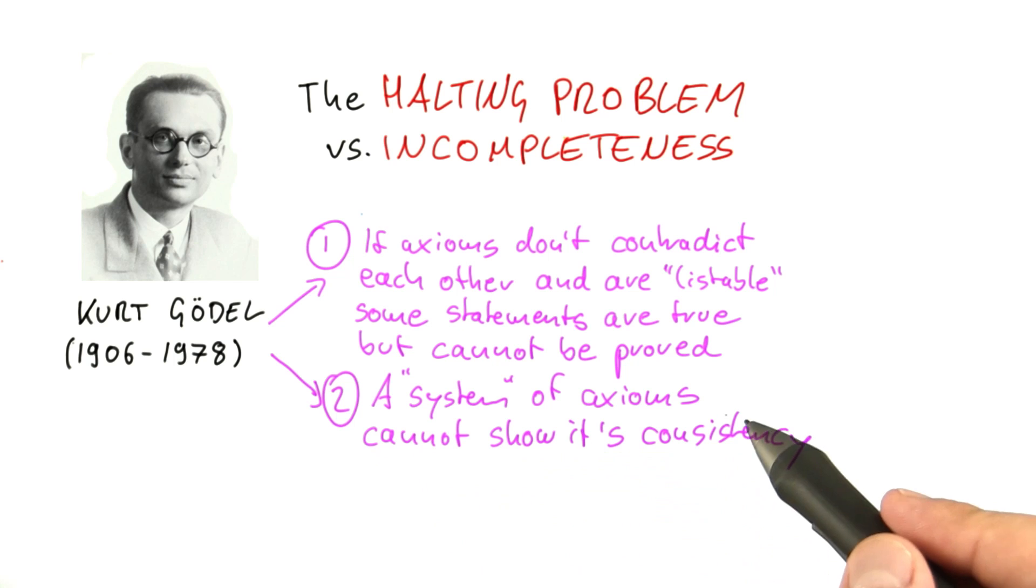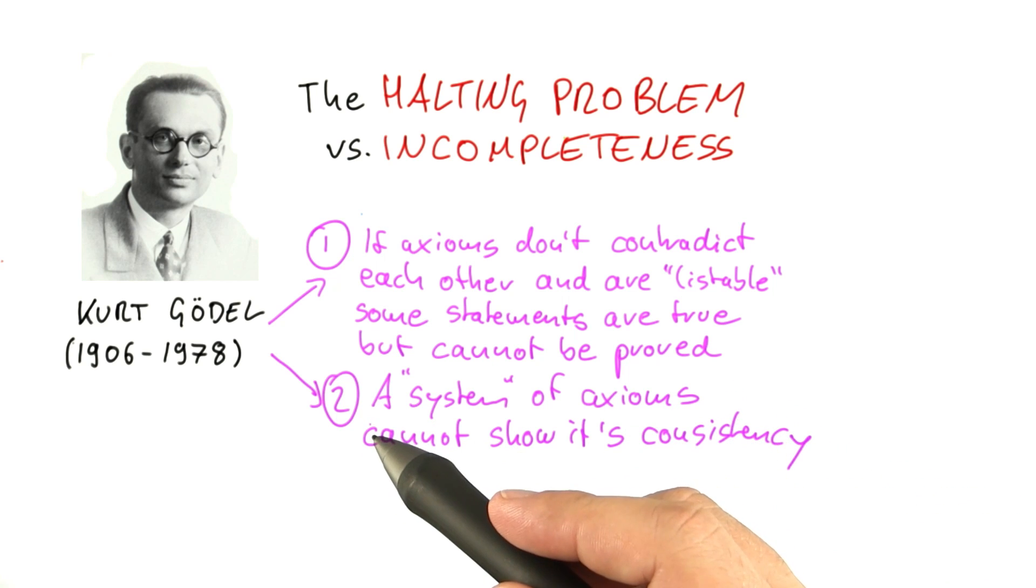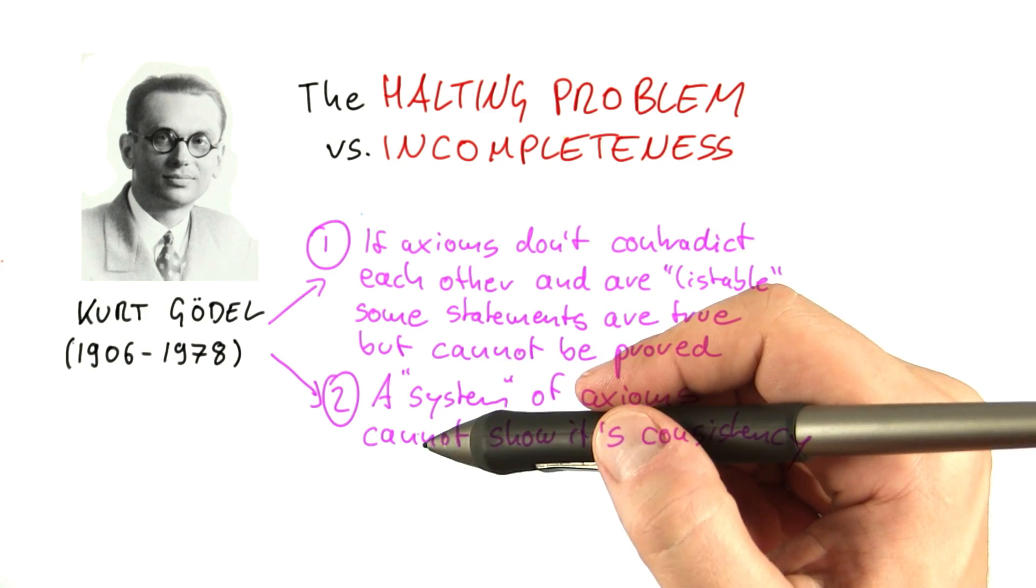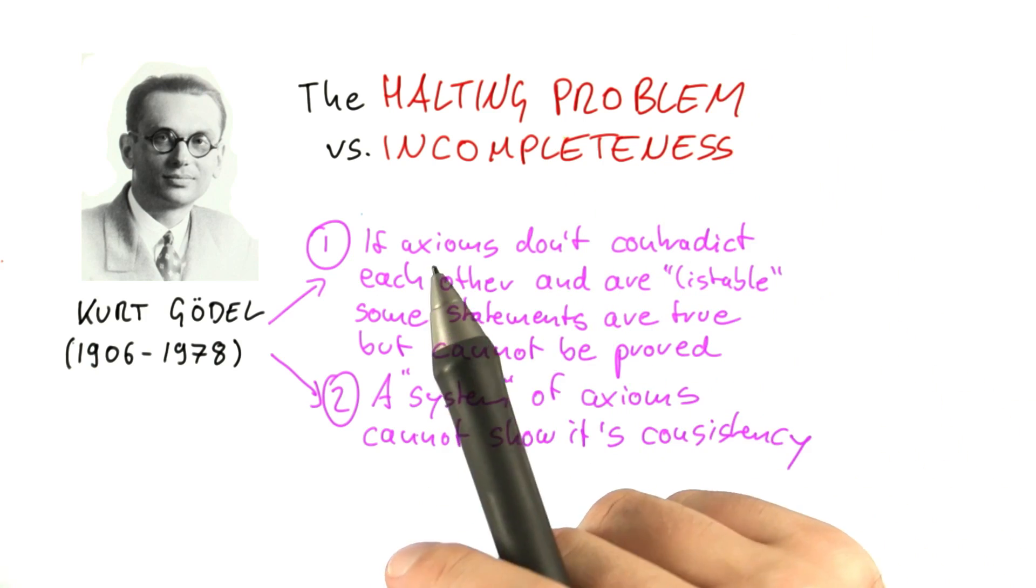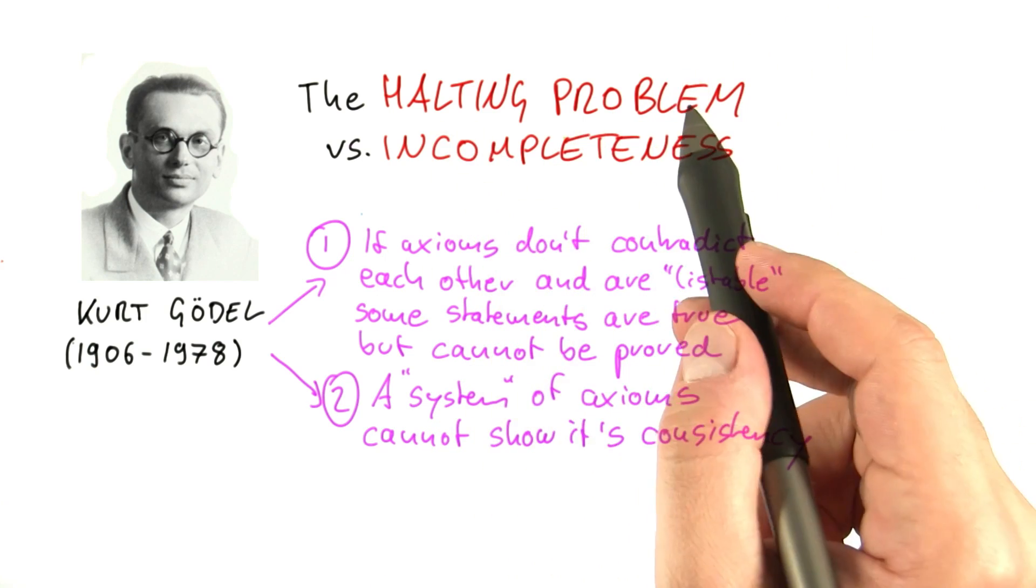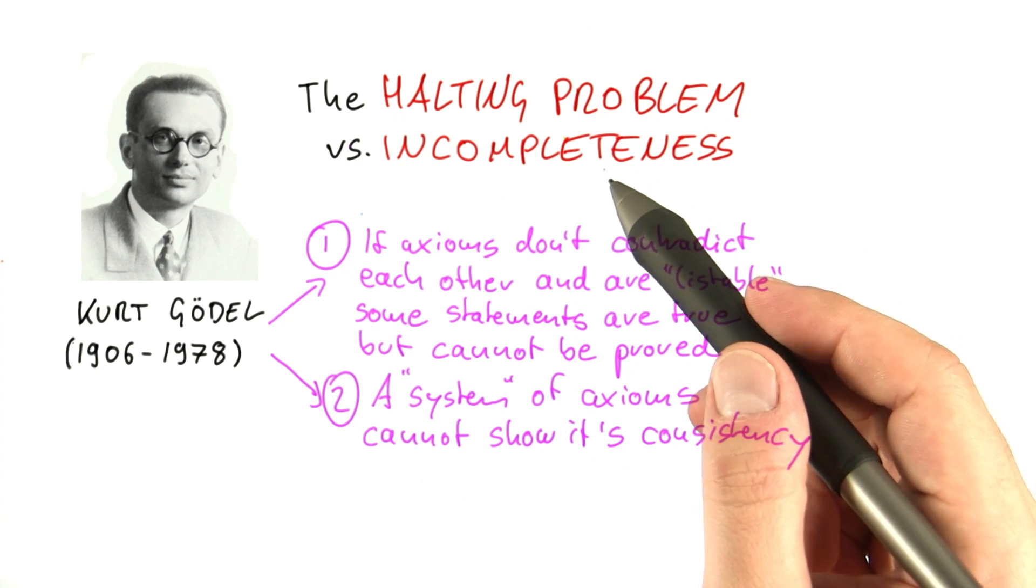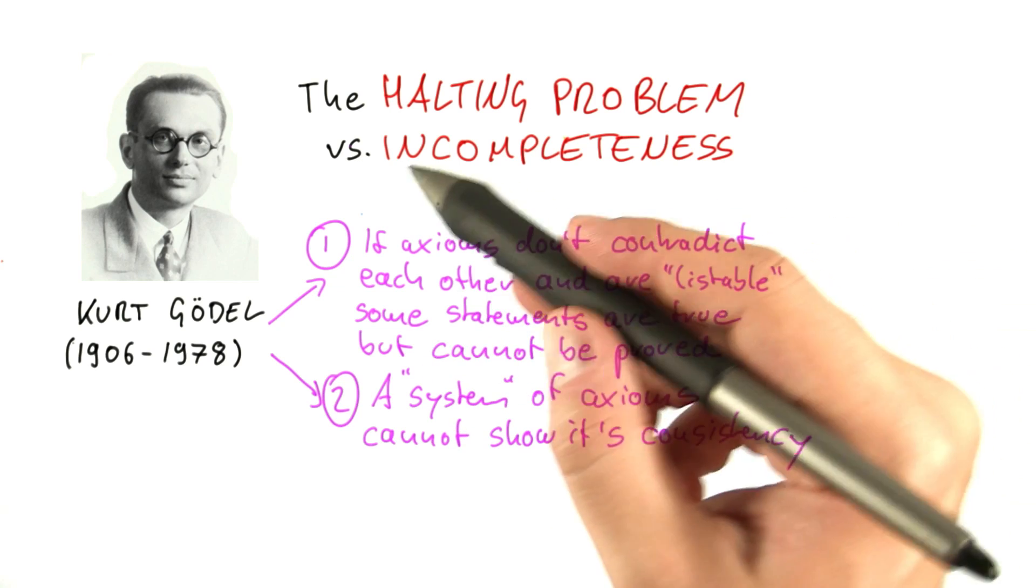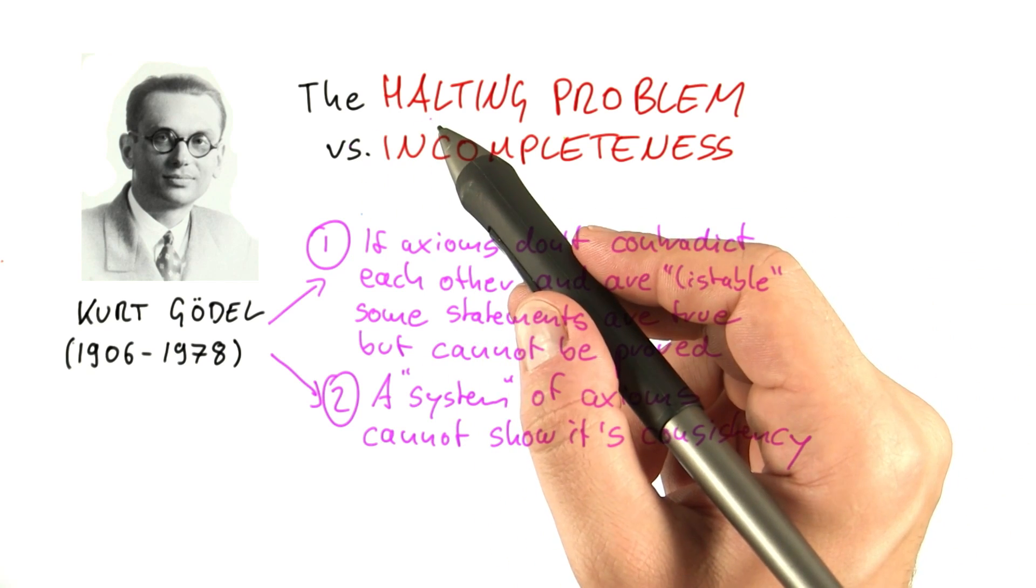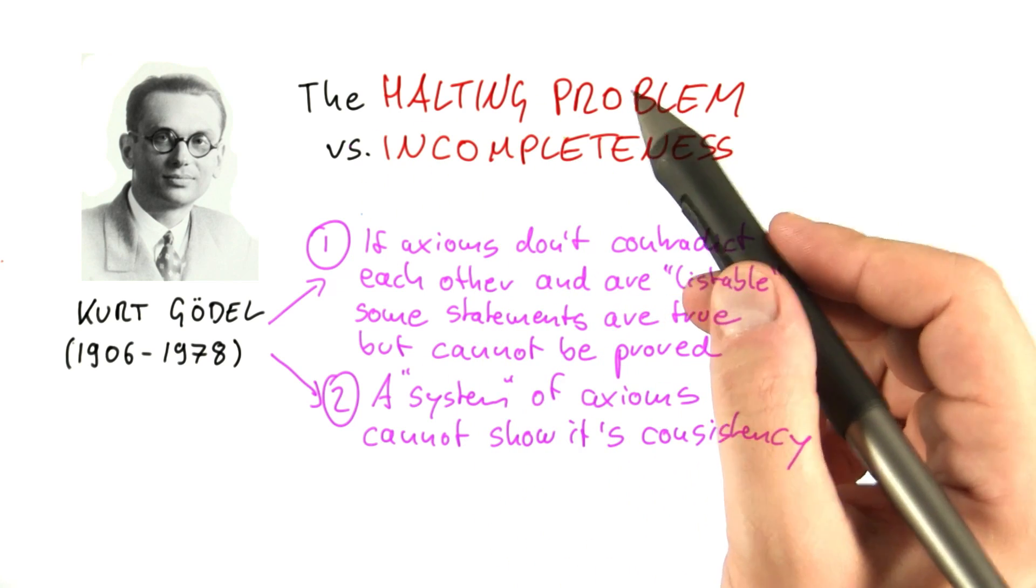And the second incompleteness theorem is very similar to undecidability in the sense that it shows that you cannot use a system to prove everything about that system, very loosely speaking. And the undecidability of the halting problem and all the other undecidable problems says that we cannot use algorithms to calculate everything about algorithms.